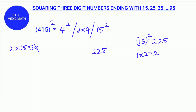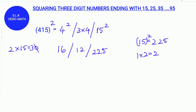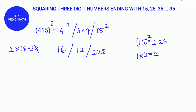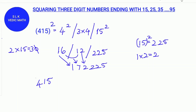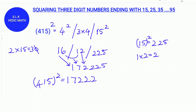Next, we do 3 into 4 which is 12. Then we do 4 square which is 16. In the last part, there is only supposed to be 3 digits; in the middle part, there is only supposed to be 1 digit. So we write 225 down as it is. We write down this 2 as it is, then we add this 1 to 6 — so 6 plus 1 is 7. Then we write down this 1 as it is. So 415 square is 172,225.